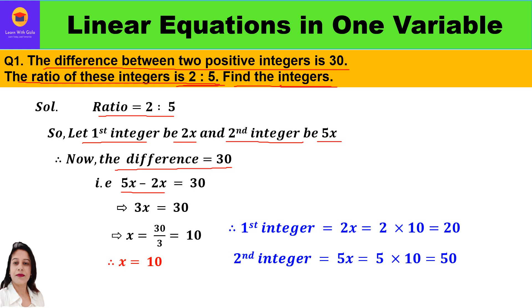We can say 5x minus 2x is equal to 30. This is the linear equation we will solve. So 5x minus 2x is 3x, which equals 30. Therefore, x is equal to 30 divided by 3, that is 10.